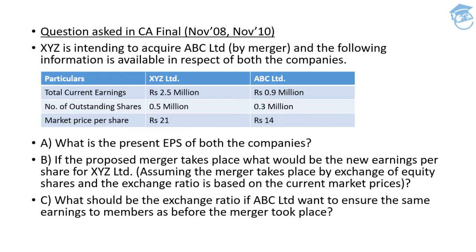The question says: XYZ is intending to acquire ABC Limited by merger, and the following information is available in respect of both the companies. I have prepared a tabular presentation segregated into three columns: one for particulars, second for XYZ Limited, third for ABC Limited. The first row is total current earnings — for XYZ Limited it's 2.5 million, and for ABC Limited it's 0.9 million.